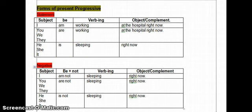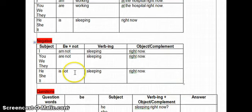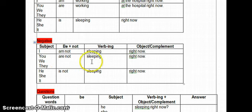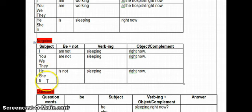For the negative form of present progressive: if the subject is I, use 'am not' + verb-ing — 'I am not sleeping right now.' 'You are not sleeping right now.' 'We are not sleeping right now.' 'They are not sleeping right now.' And if the subject is he, she, or it, use 'is not' + verb-ing, and so on.